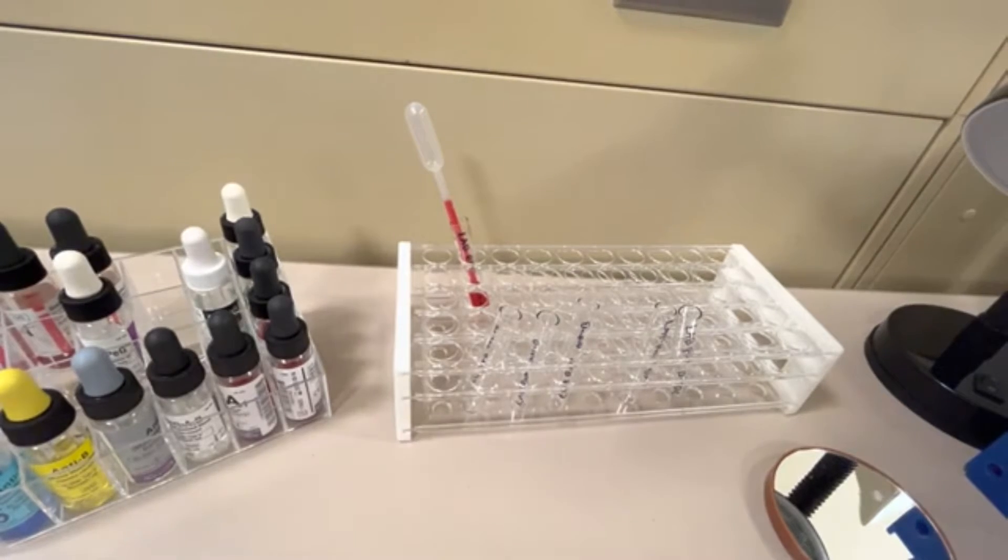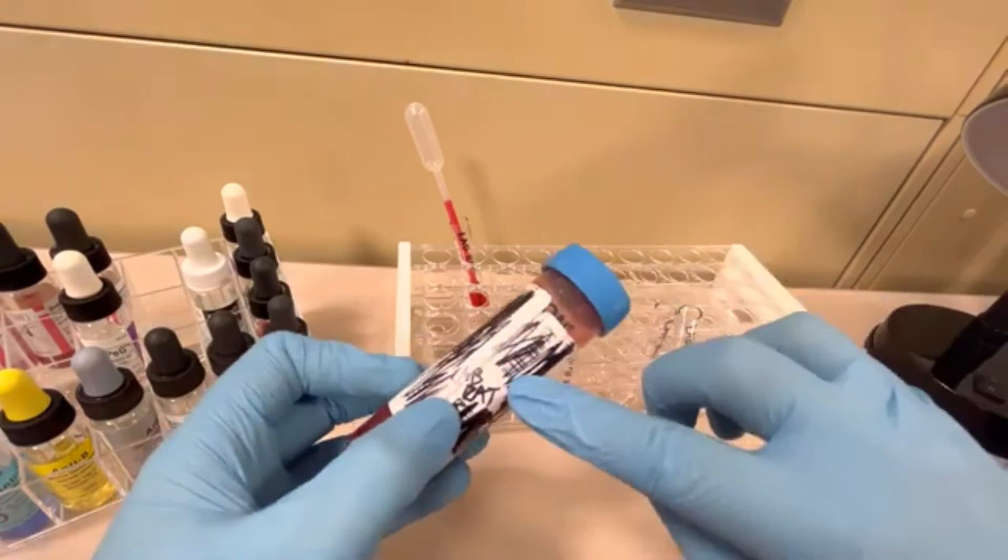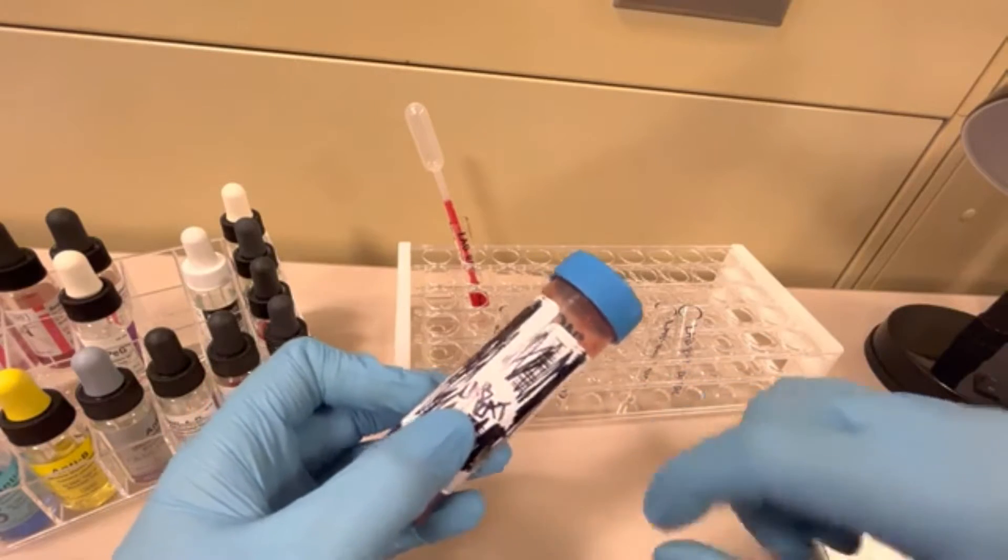In this video, I'm going to be demoing a cord blood ABRH and DAT test. The first thing we need is actually a cord blood and I do happen to have one here. It's labeled with the patient name, first and last name. For this demo, it's going to be LabRat.